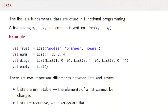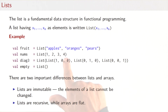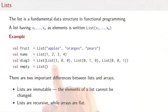Let's see how lists are defined in the standard library. To construct a list having elements x1 to xn, you simply write 'list' and the elements in parentheses. For example: a list of fruit consisting of apples, oranges, and pears; a list of numbers consisting of one to four; the diagonal of a three-by-three matrix as a list of lists; and the empty list, written as list with open and closed parentheses.